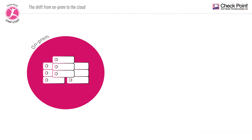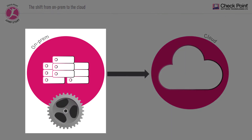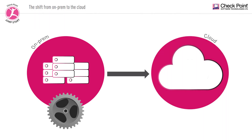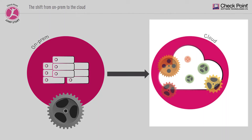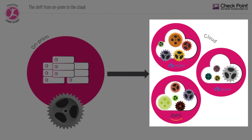Moving from an on-prem mindset and implementation to the cloud means a shift from a monolithic approach, where services and applications are fully hosted on servers supplying all the resources needed, to a dynamic, decentralized approach comprised of microservices which have the potential of being scattered across multiple platforms, environments, and resources.